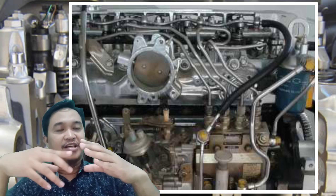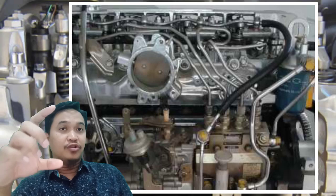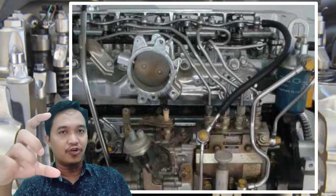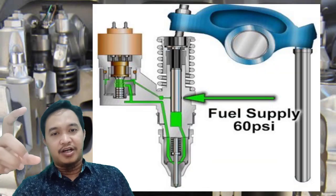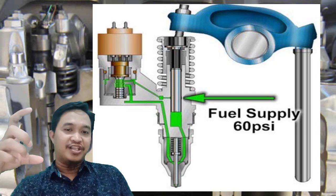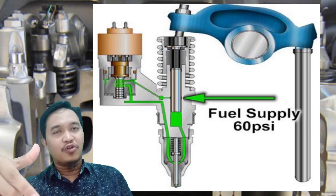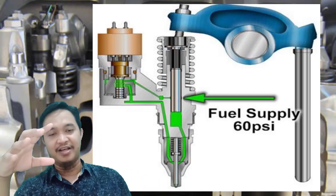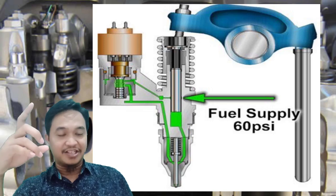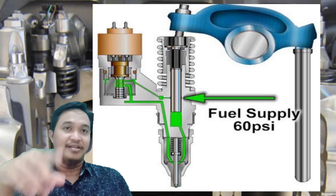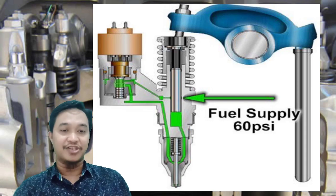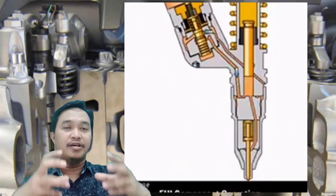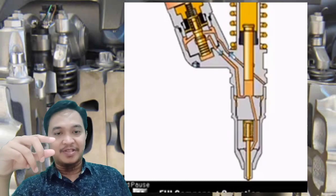Kalau di injektor, fuel low pressure itu langsung diinjeksi di injektornya — langsung didorong, disediakan oleh katup yang diatur oleh solenoid ini. Kemudian fuel yang sudah tersedia itu didorong oleh rocker arm sehingga terinjeksi ke ruang bakar. Di dalam injektor ini juga ada nozzle-nya di bagian bawah, dan dia juga menggunakan spring untuk mengabutkan bahan bakar ke dalam ruang bakar.